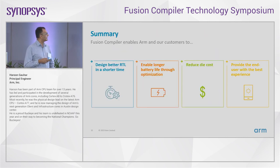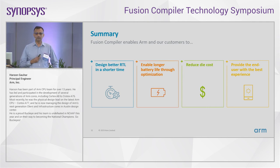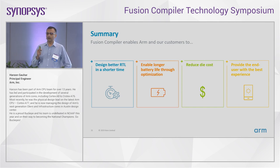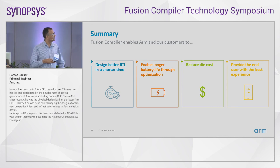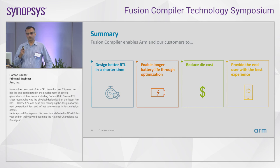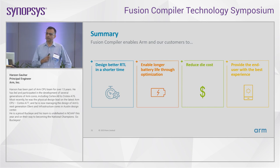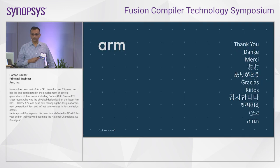To summarize: Fusion Compiler enables us to produce a better RTL in a much shorter time, and that's good for us and good for you because we give the RTL to you. You get a much better quality RTL coming out of Fusion Compiler. We have seen Fusion Compiler giving us power and area benefit — better power means longer battery life, and in smaller geometry the area is very critical. So we get reduced area. At the end, for us and for our customers, it gives a better experience for both sides. Thank you very much.